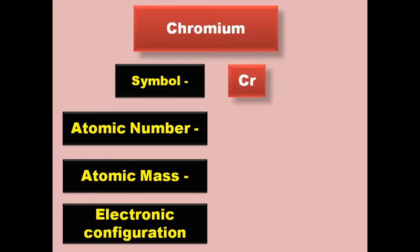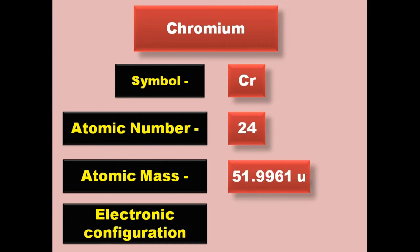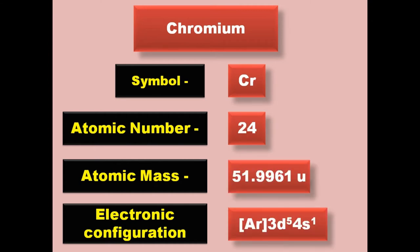Chromium has symbol Cr, atomic number 24, atomic mass 51.9961, electronic configuration [Ar] 3d5 4s1. Chromium is a transition metal and exists in solid form at room temperature.